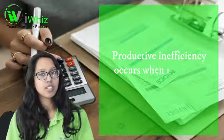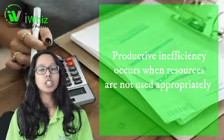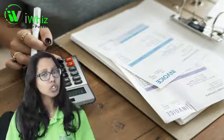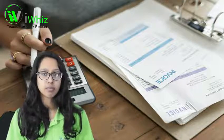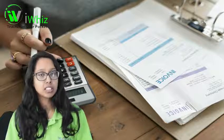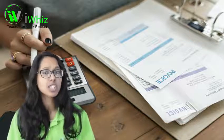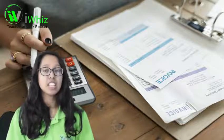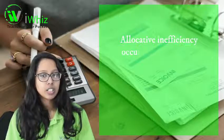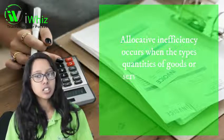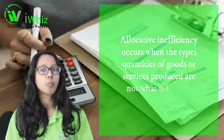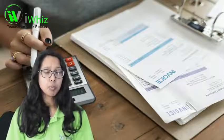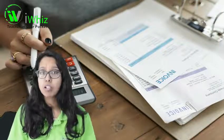Productive inefficiency occurs when resources are not used appropriately to produce the maximum number of goods at the lowest cost and the best quality. If we don't have goods that are cheap enough and of very good quality, then the production side is inefficient. Allocative inefficiency occurs when goods or services are produced but are not what consumers actually demand in the market.